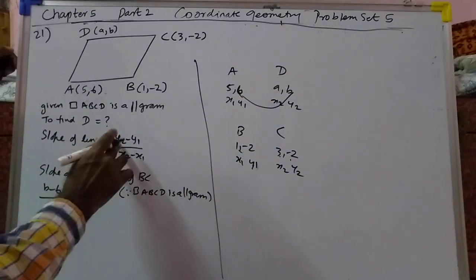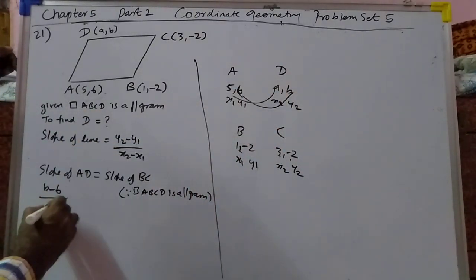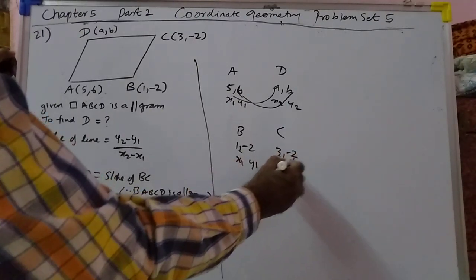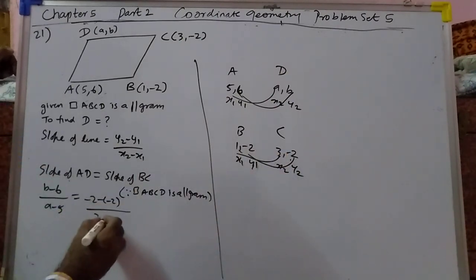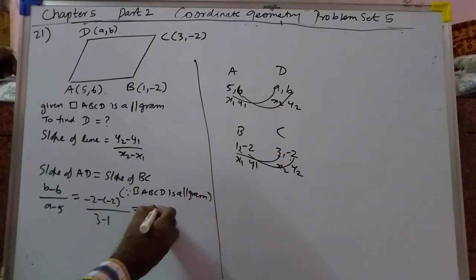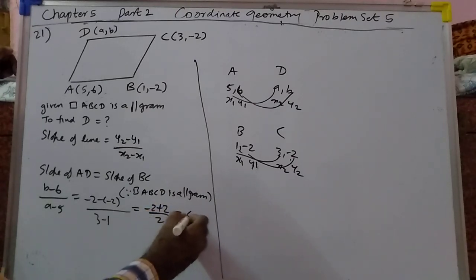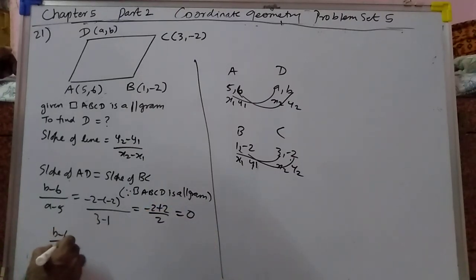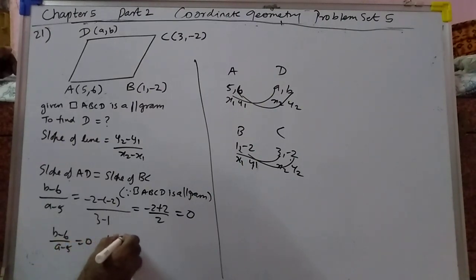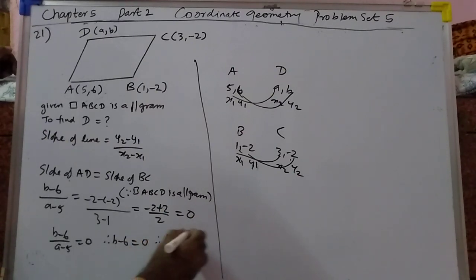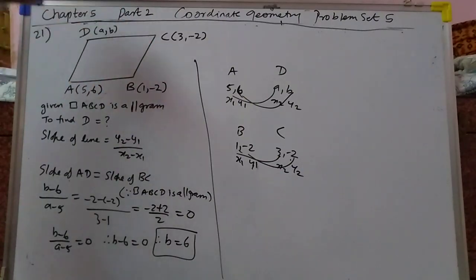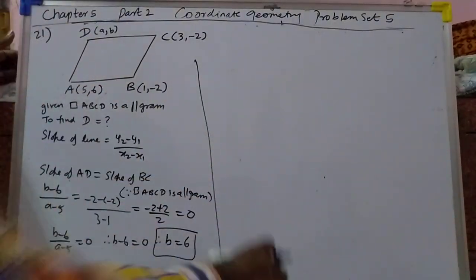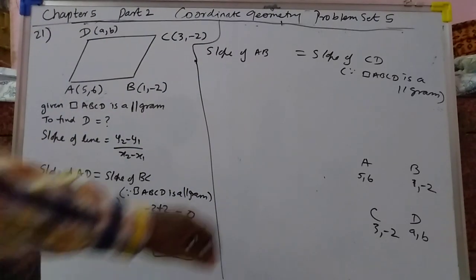Using the slope formula: (B minus 6) upon (A minus 5) is equal to slope of BC, which is (minus 2 minus 2) upon (3 minus 1) — wait, that becomes minus 2 plus 2 upon 2, that is equal to 0. So B minus 6 upon A minus 5 equals 0, therefore B minus 6 equals 0, therefore B equals 6.